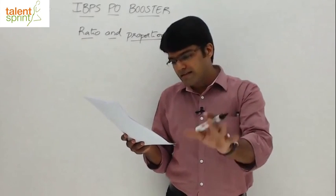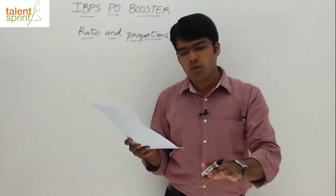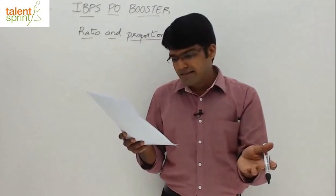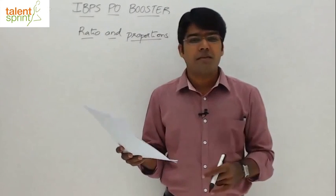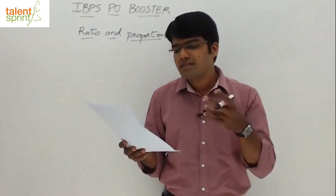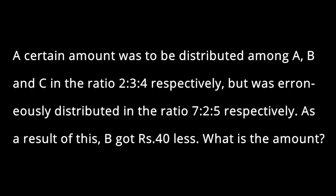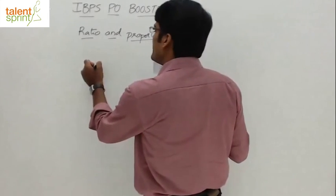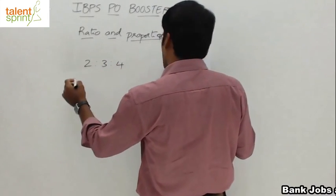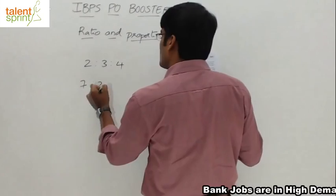A certain amount should be distributed in the ratio 2:3:4, but there was a mistake and it got distributed in the ratio 7:2:5. Because of this, B got 40 less. So the actual ratio is 2:3:4 and the wrong ratio is 7:2:5.